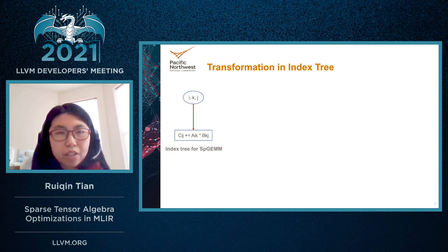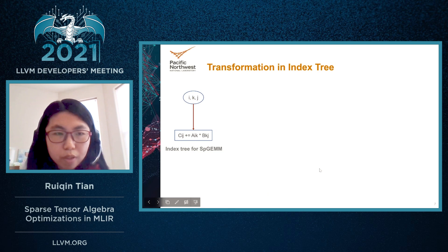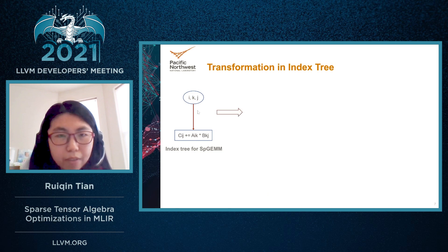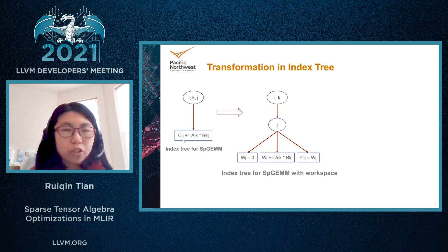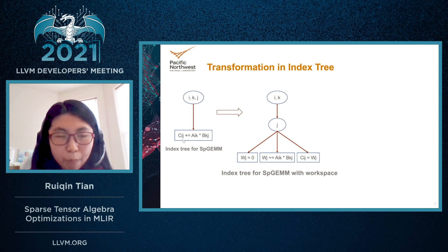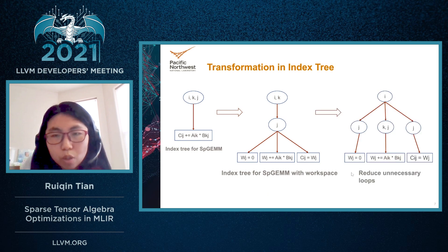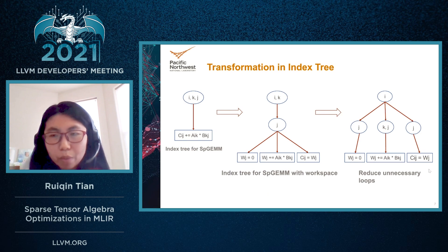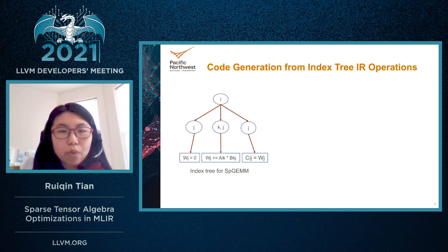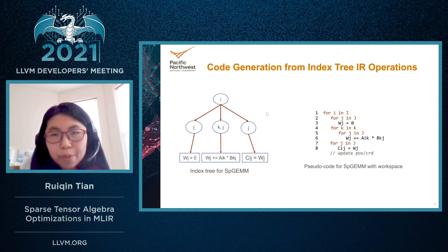After identifying the indices that need workspace, we apply the workspace transformation on the index tree. Originally we have an index tree, and since dimension j in matrix C is sparse, we apply workspace transformation on dimension j of C. The compute node is split into a set of operations, and index j is split separately. We also do a small optimization to remove unnecessary loops — for example, the initialization w[j]=0 has no relationship with index k, so we remove index k along its path. The transformed index tree then represents the corresponding generated code.